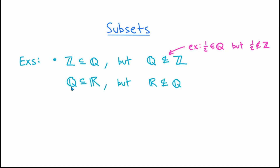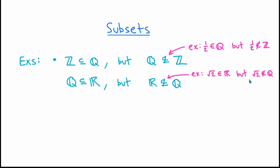Similarly, the rationals are a subset of the real numbers — that's really a consequence of the way real numbers are constructed in analysis. On the other hand, there are real numbers that are not rational; one example is the square root of 2. The square root of 2 is a real number, but it can't be written as a fraction. This is not completely obvious, but many of you probably know how to prove this, and it's not too difficult.